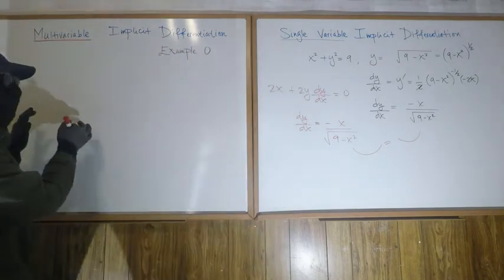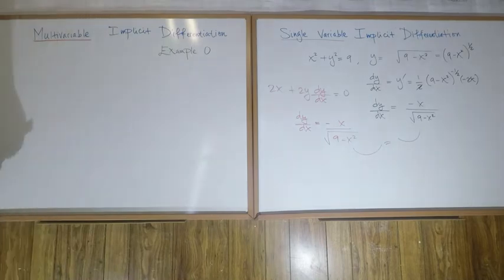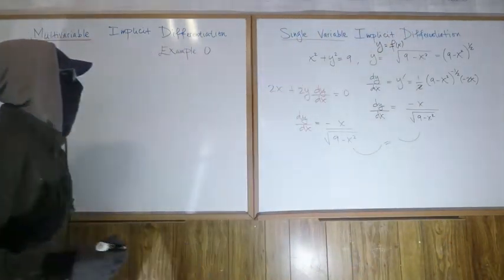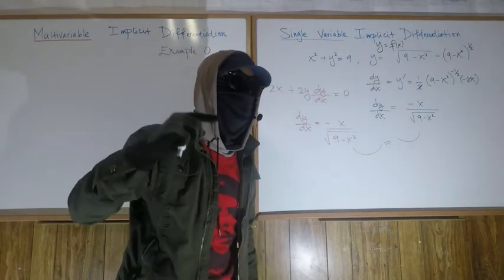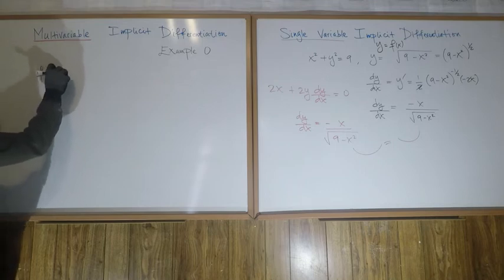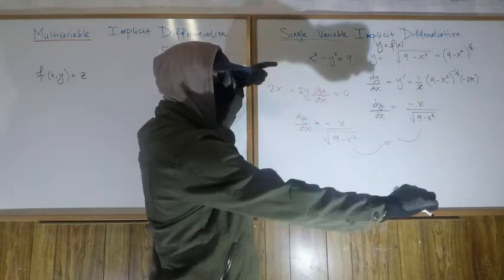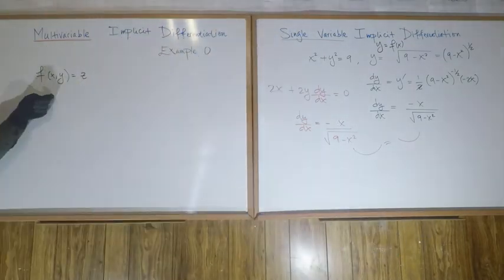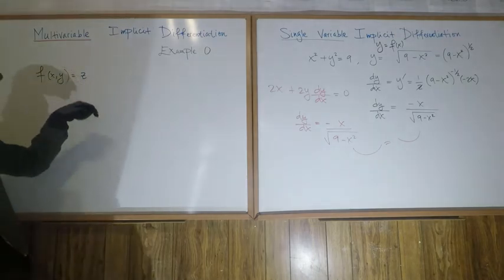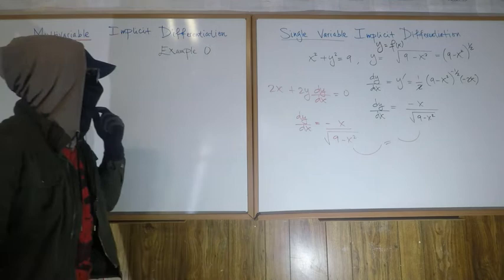When talking about multi-variable functions, we don't have y equals f(x). For multi-variable functions, we have f(x, y) equals z. The vertical axis is now the z-axis, and the inputs come from the xy-plane. So the inputs are (x, y) and the output is the height along the z-axis, which may be negative.